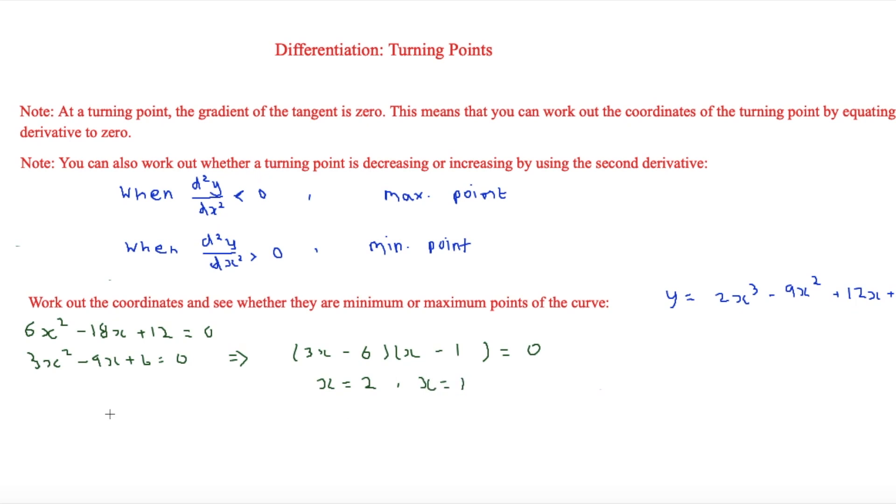Now we just want to sub this back into the y. So the y is here to get the y's. When you sub 1 back in you're going to get y = 12. So therefore one of the coordinates is equal to (1, 12).